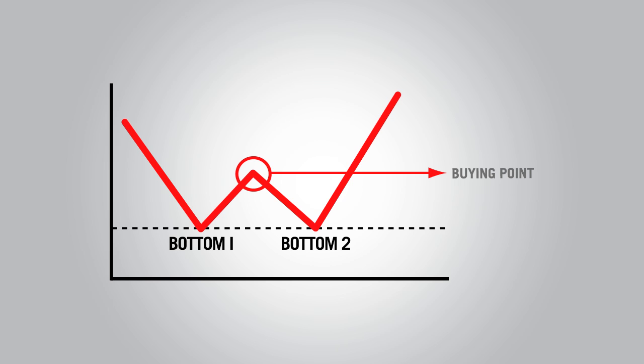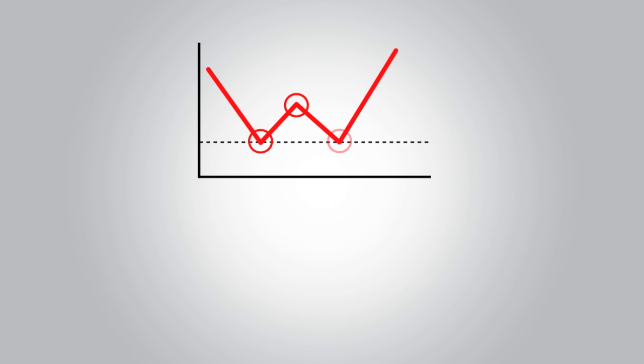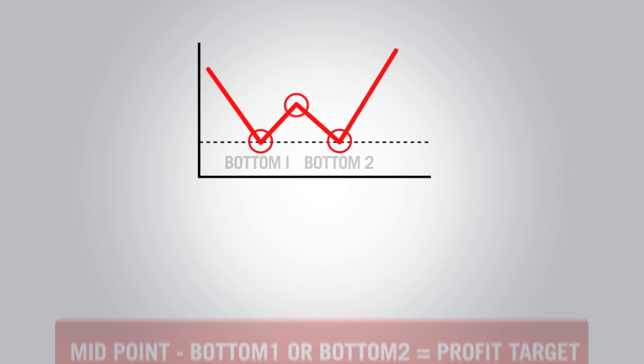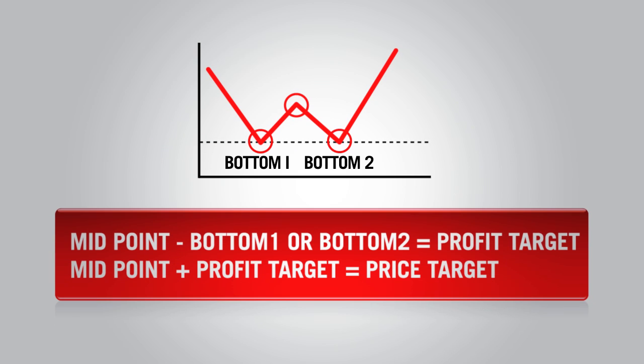The usual method of entering a trade using a double bottom is to buy when the price rises above the resistance point between the bottoms — this point is represented by the circle on the chart. The profit target is calculated by subtracting the price of one of the bottoms from the midpoint in between the two bottoms, and adding that number to the value of the resistance point between the two bottoms.